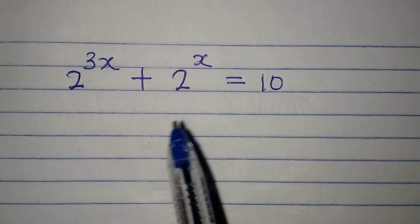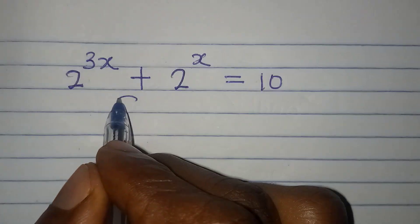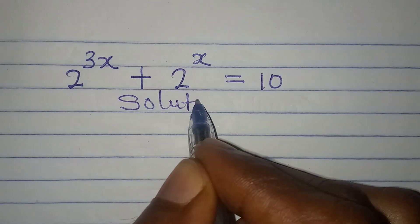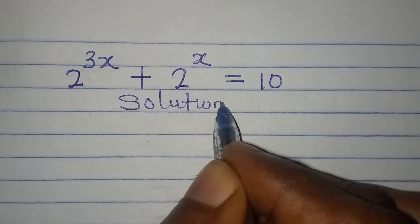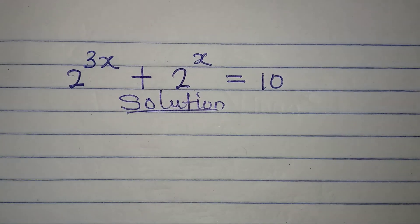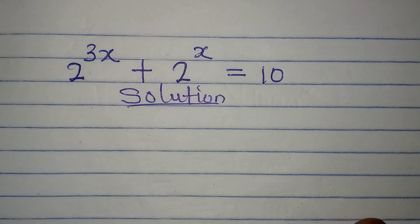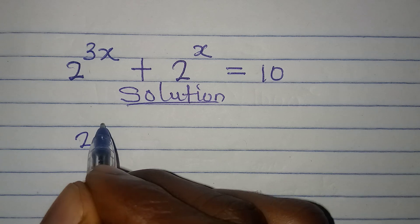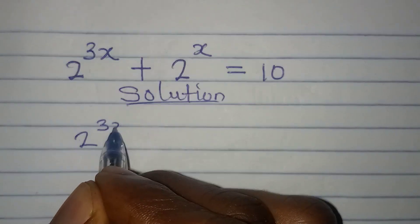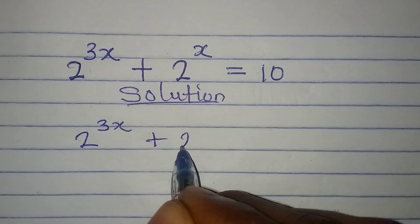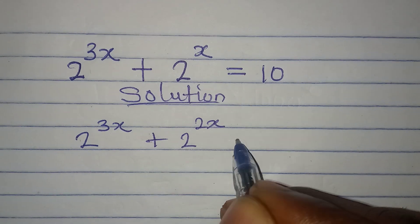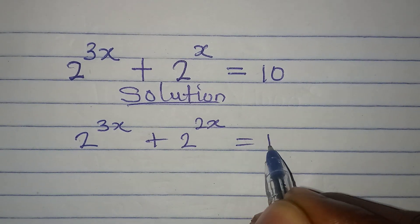Hello everyone, let's solve this problem quickly. We are looking for the real value of x. We have 2 to the power of 3x plus 2 to the power of x equals 10.